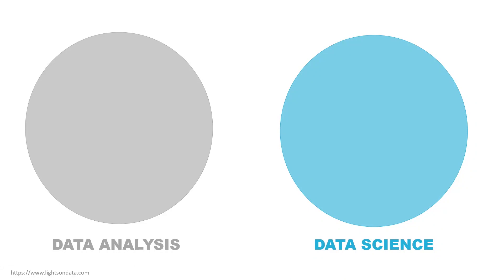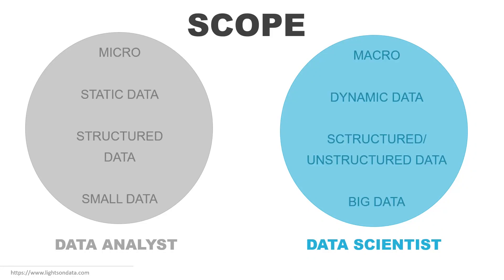Data analyst versus data scientist — let's start by looking at the scope. The scope for a data analyst is said to be micro, as they usually work with static data, a snapshot of that data, and it generally tends to be structured data. On the other hand, the scope of a data scientist is said to be macro, as they work more with dynamic data that can change frequently, and whatever models and solutions they've built need to adapt on the fly. They are more likely to work with big data that is both structured and unstructured, with high volume, velocity, and variety.